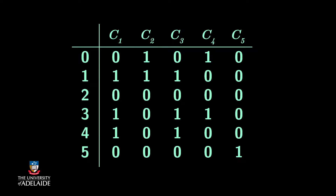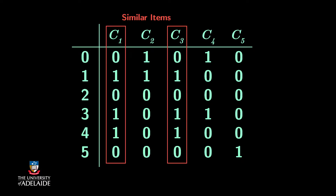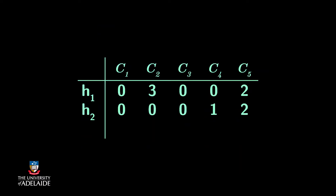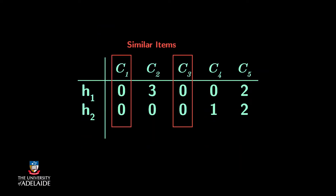The basic idea is to hash columns of signature matrices several times. Similar items are more likely to be hashed to the same bucket than dissimilar ones. In this process, we consider any pair that hashes to the same bucket for any of the hashings as a candidate pair, and we only check candidate pairs for similarity.